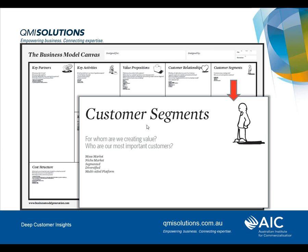We need to look at these customer segments. For whom are we creating value? Who are our most important customers? What do they think and what are they looking for? What will they pay for? How much will they pay? Have we got a mass market or a niche market? How is it segmented and how do they behave differently? Is it diversified? Can we get money from different aspects of that target market? All these things are important to understanding the customer so we can develop the business around it.